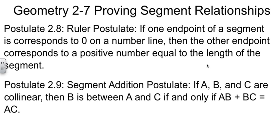We'll start with a couple of postulates, the first of which is called the Ruler Postulate. Your book numbers it as 2.8. It's the Ruler Postulate, and the idea is if one end of a segment is set up so that it's at zero on a number line, then the other end will end up at some other number. That number is equal to the length of the segment.